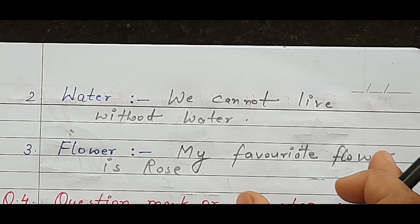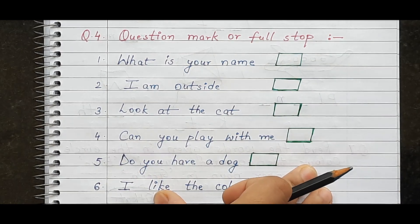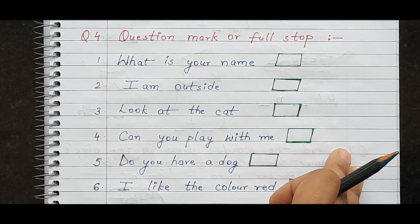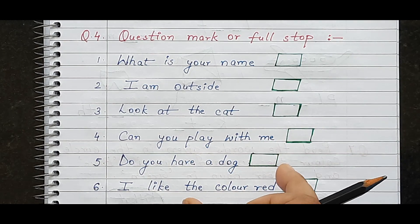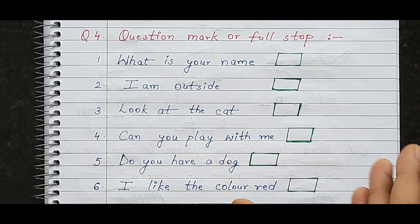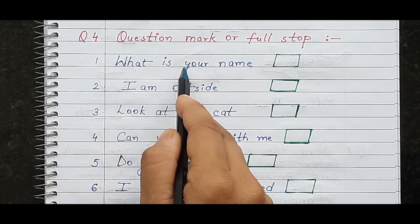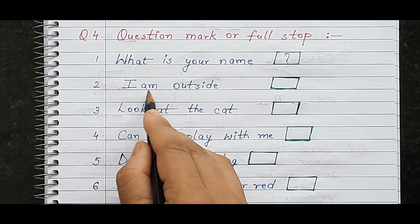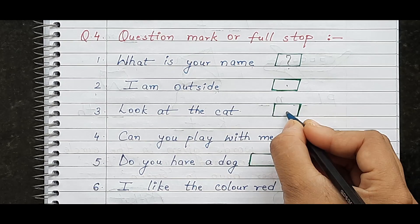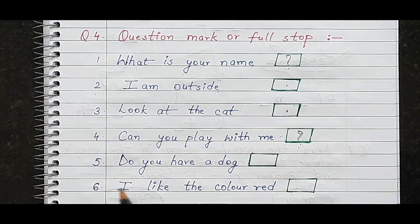Here is the next question: question mark or full stop. You read the sentences and determine whether to use a question mark or full stop at the end. In Class 1, children learn when to use a question mark and when to use a full stop. For example, 'What is your name?' — here a question word is used, so we put a question mark. 'I am outside' — this is a normal sentence, so a full stop. 'Look at the cat' — again a normal sentence, so a full stop.